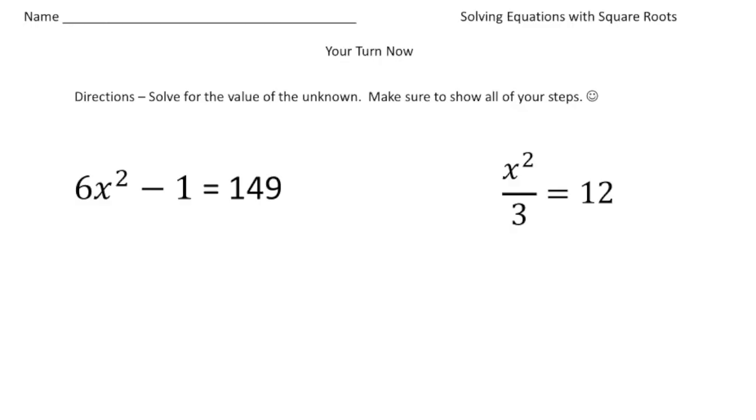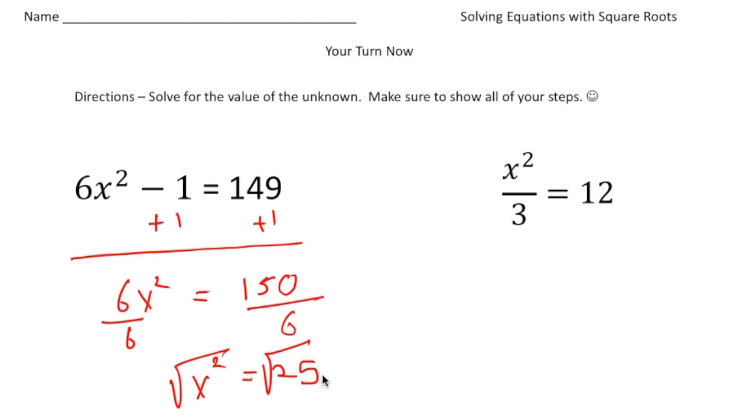Alright, welcome back. Let's see you do these practice problems. So the first problem, we have 6x squared minus 1 equals 149. So I'm going to first add 1 to both sides. And that gives us 6x squared equals 150. And then to get the x squared by itself, I'm going to divide both sides by 6. So x squared is going to equal 25. And now here's the new step to get the x by itself: square root both sides. And I know the square root of 25 is 5 and also negative 5. So x is going to equal both positive 5 and negative 5. And there's your answer.